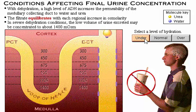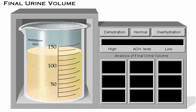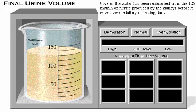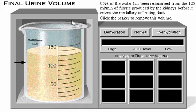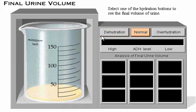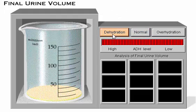Now let's look at the final volume of urine produced per minute and per day for each level of hydration. Recall that 95% of the water has been reabsorbed from the 125 milliliters per minute of glomerular filtrate produced by the kidney before the filtrate enters the medullary collecting duct. With high levels of antidiuretic hormone, the approximate final urine volume is 0.2% of the filtrate — equal to one-quarter of a milliliter per minute, or 400 milliliters per day. Two conditions in which this might occur are severe dehydration or blood loss.